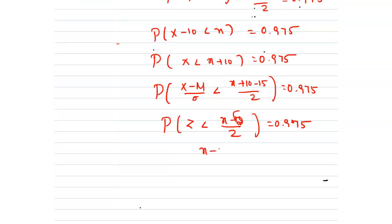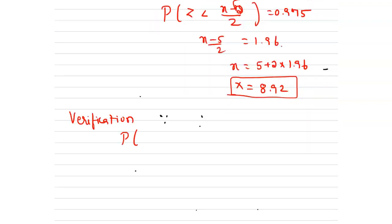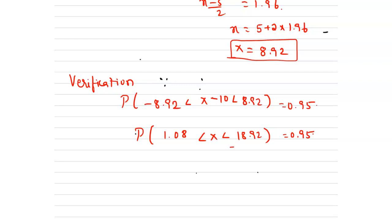So p of z less than (x minus 5) divided by 2 equals 0.975, which gives z equal to 1.96. Therefore (x minus 5) divided by 2 equals 1.96, so x equals 5 plus 2 times 1.96, which equals 8.92. Hence x equals 8.92. We verify: p of negative 8.92 less than X minus 10 less than 8.92 equals 0.95. Adding 10 on both sides gives 1.08 less than X less than 18.92, and the condition is satisfied.